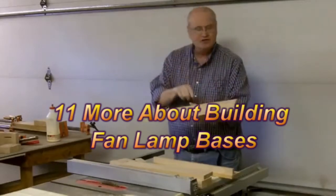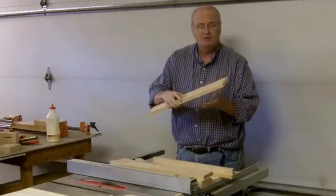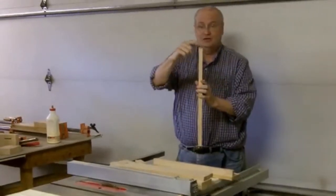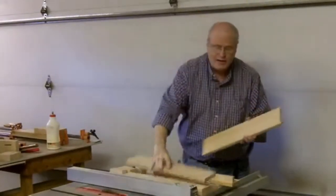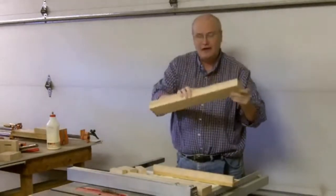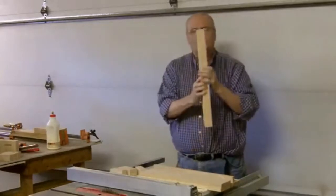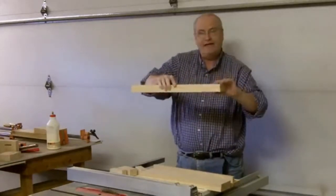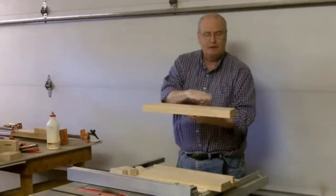First of all, I bought a bunch of oak and cut it down to one inch by four inch planks. Now one inch in wood is usually closer to three-quarters of an inch. So when I put both of them together and glued them, I have the width that I need for the height of a good fan lamp base.